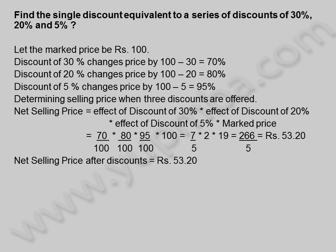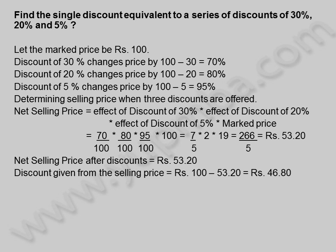Net selling price after discounts is equal to 53.20 rupees. Discount given from the selling price is equal to 100 - 53.20 rupees, is equal to 46.80 rupees.